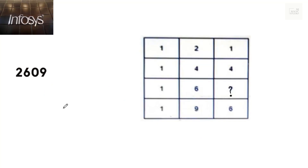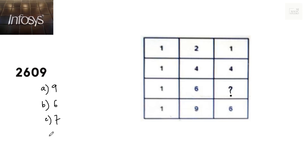For question number 2609, the options we have are 9, 6, 7, 8, and your timer begins now.